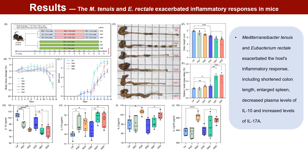Subsequently, we conducted experimental validation using these two core species in both normal C57BL/6 mice and a DSS-treated mouse model. The results indicated that both core species exacerbated the host's inflammatory response, evidenced by colon shortening, spleen enlargement, decreased plasma IL-10 levels, and increased IL-17A levels. Correlation analyses alongside experimental validation consistently demonstrated that Mediteranean Bacteroides exhibited strong pro-inflammatory effects and elevated IL-17A levels.